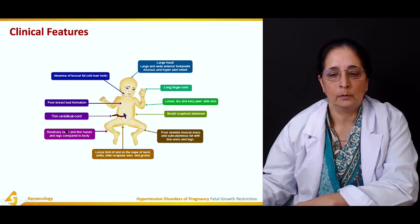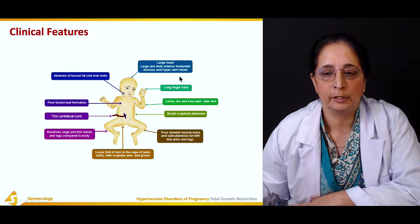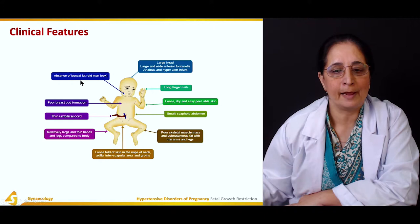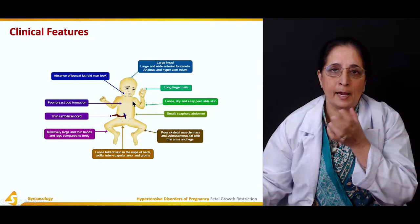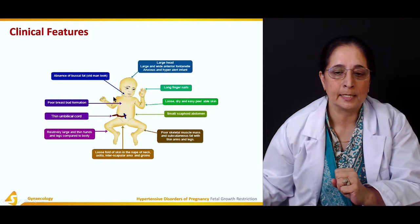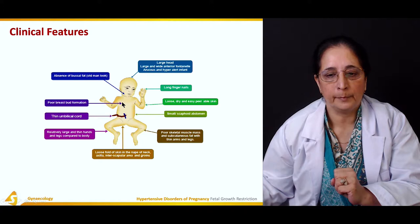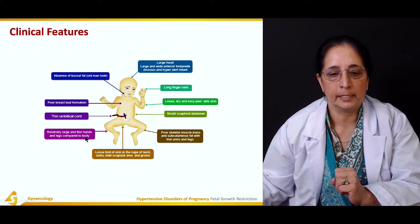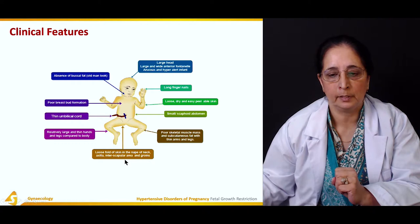The clinical features of fetal growth restriction include absence of buccal fat, giving the baby an old man appearance. There is wrinkling of the skin due to lack of underlying fat. Other features include poor breast bud formation, a thin umbilical cord, and loose folds of skin in the nape, axilla, and interscapular area and groins.